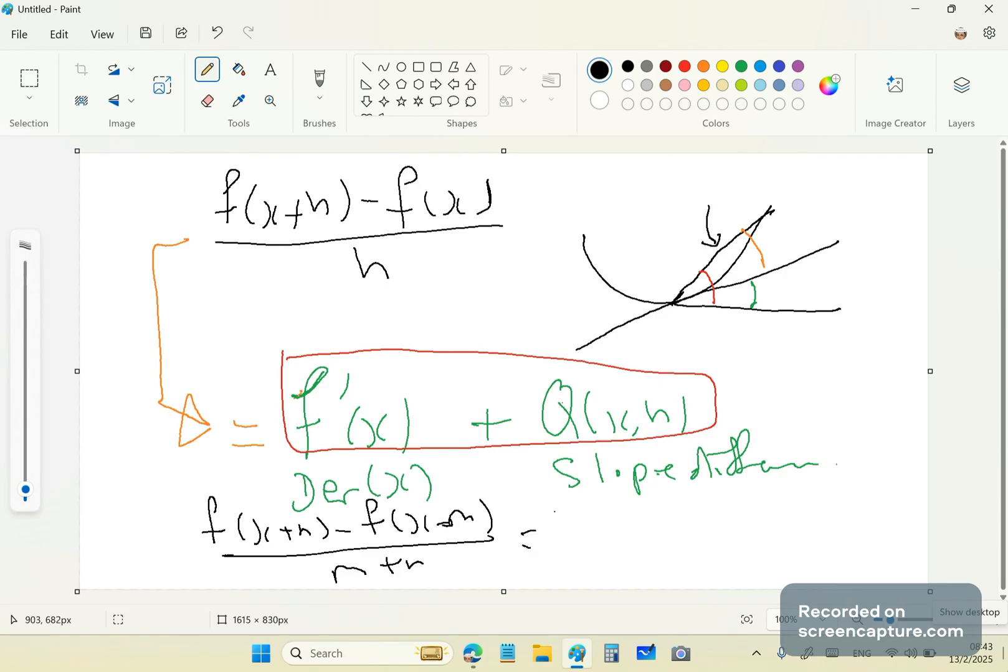You have f of x plus n minus f of x minus m over m plus n. And that is exactly equal to f prime of x, or it's exactly equal to f prime of x plus q of x m n, because this is always zero.